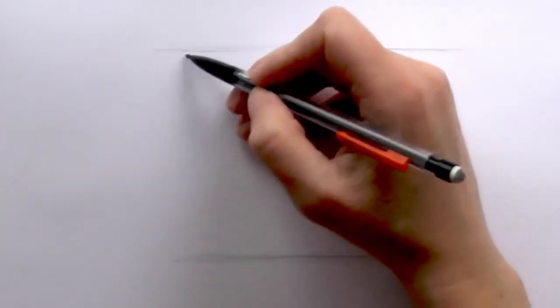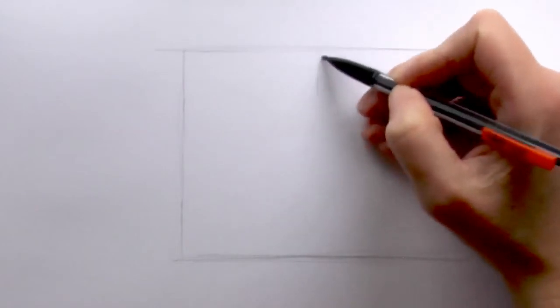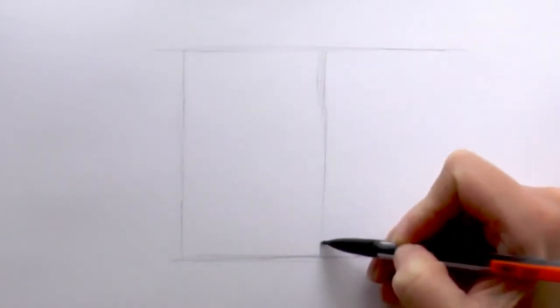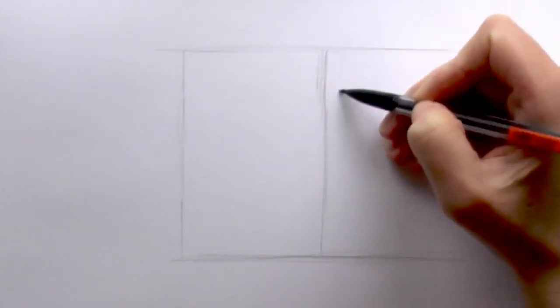So first up what we do is we just draw a line across the top of our page and then one just slightly further down. And then we draw a line down, then another line down, and then another one.